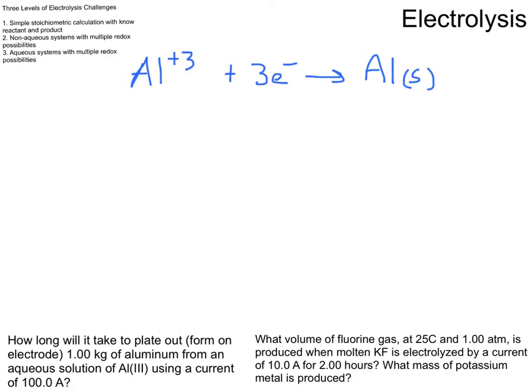If I want to make a kilogram of elemental aluminum, and I'm using a current of 100 amps. So these turn out to be basically factor label problems or dimensional analysis problems. And you should be comfortable doing this. You've been doing this since freshman year, if not sooner.